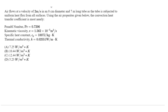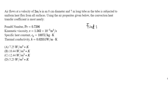We're given the Prandtl number, the viscosity, our C_P and our thermal conductivity — our K value. We want to find the convection heat transfer coefficient, our H value.